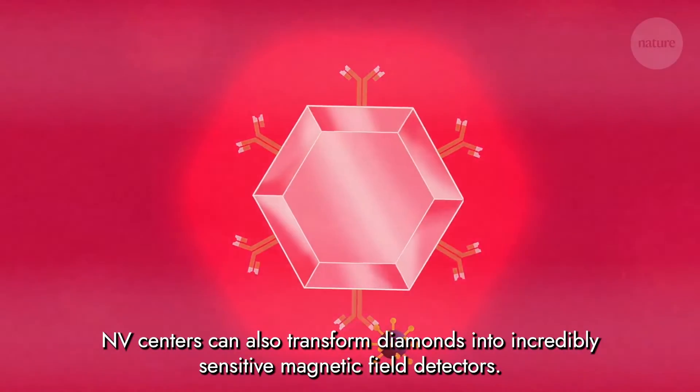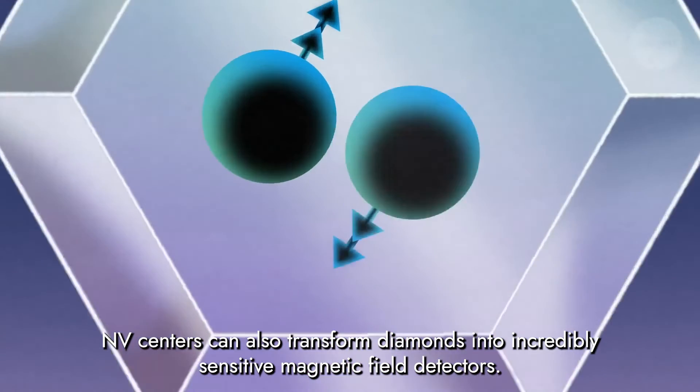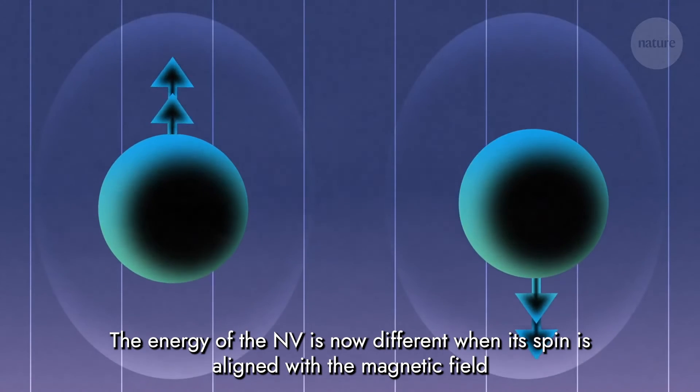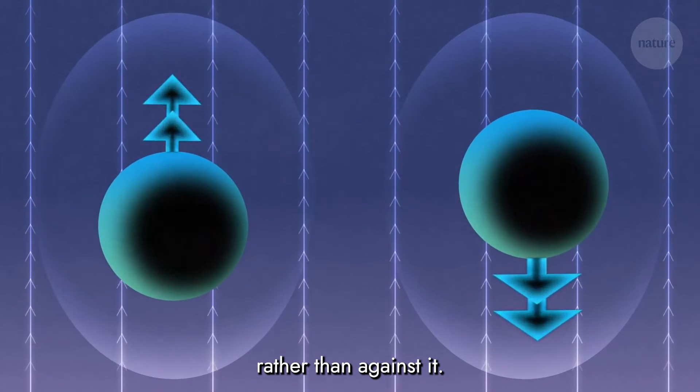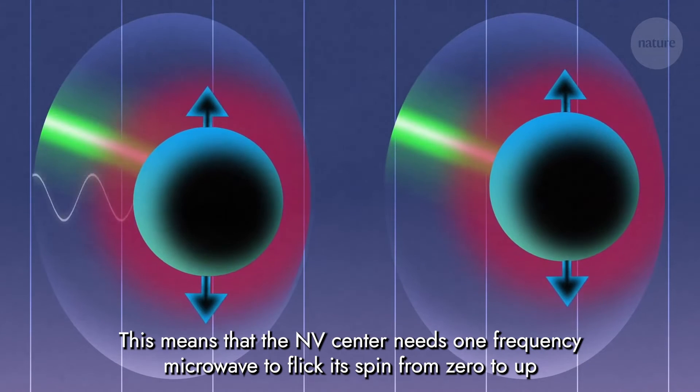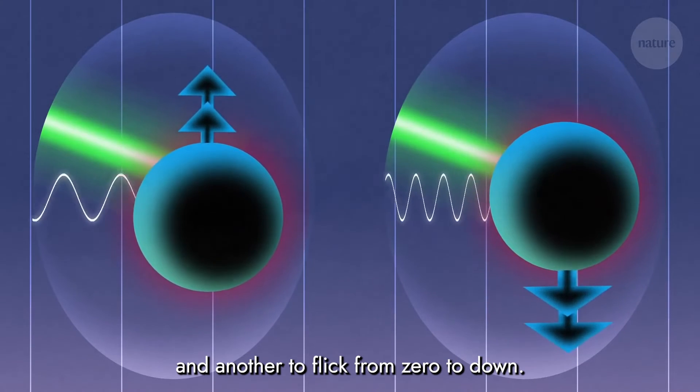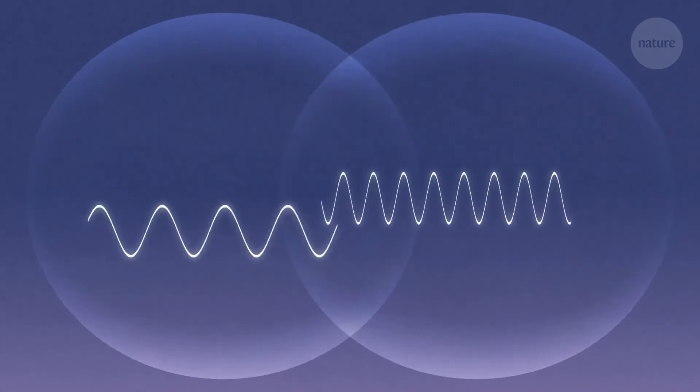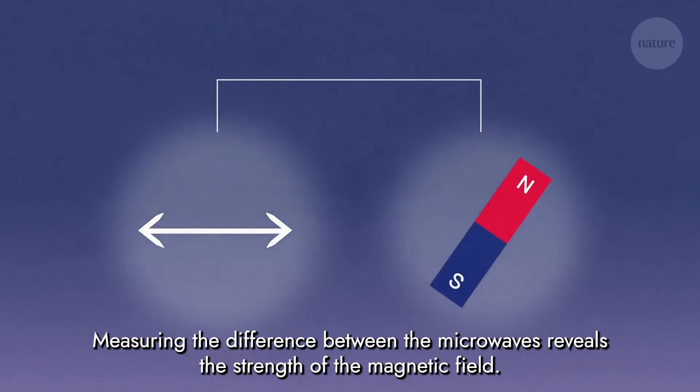NV centres can also transform diamonds into incredibly sensitive magnetic field detectors. The energy of the NV is now different when its spin is aligned with the magnetic field, rather than against it. This means that the NV centre needs one frequency microwave to flick its spin from zero to up, and another to flick from zero to down. Measuring the difference between the microwaves reveals the strength of the magnetic field.